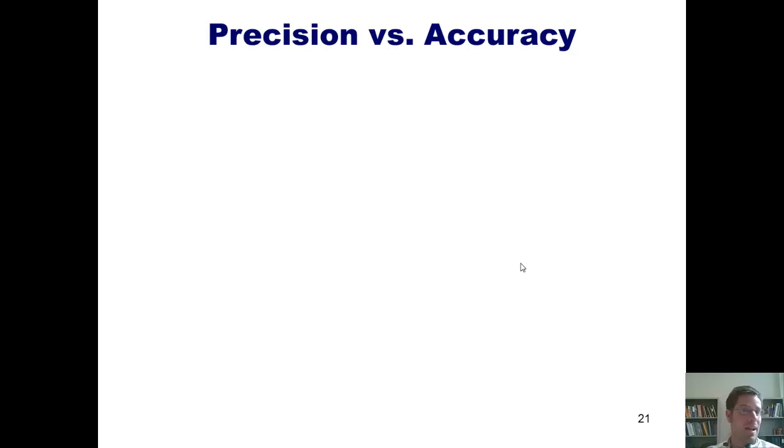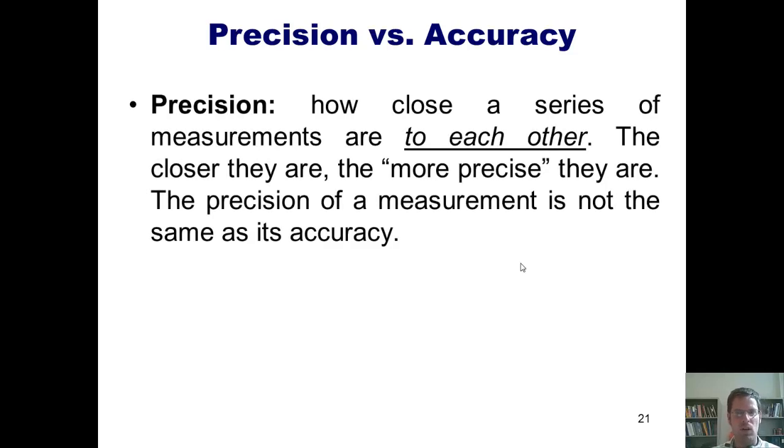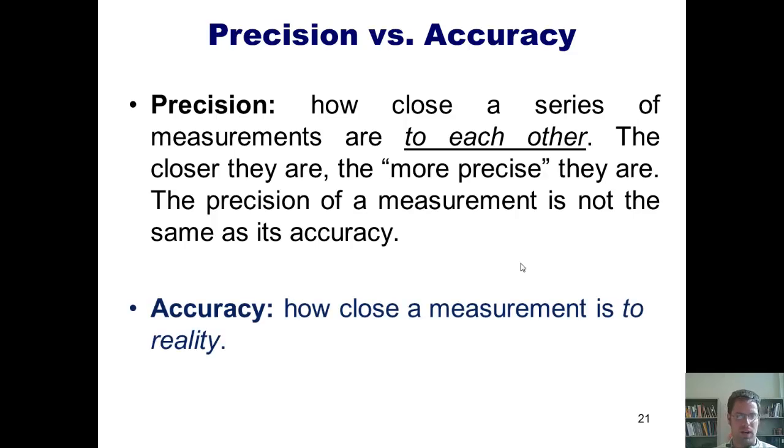What is the difference between precision and accuracy? For a layperson, absolutely nothing. But for a scientist, these two terms are not the same thing. Strictly speaking, precision is how close a series of different measurements are to each other. The closer they are, the more precise they are. The precision of a measurement is not the same as its accuracy. Accuracy, in contrast, is how close a measurement is to reality.